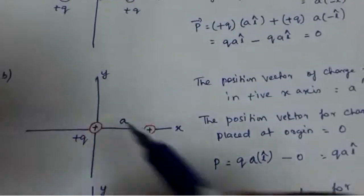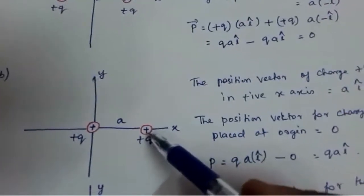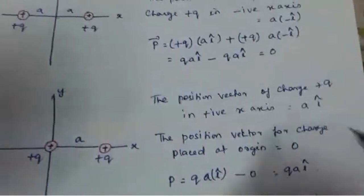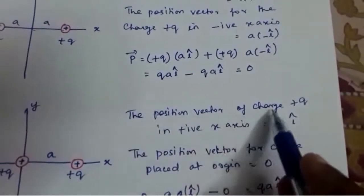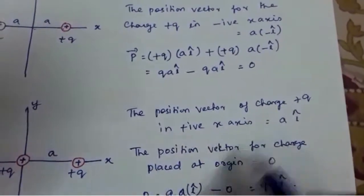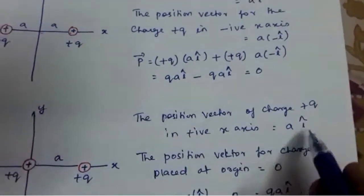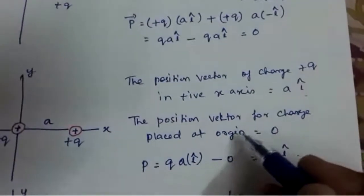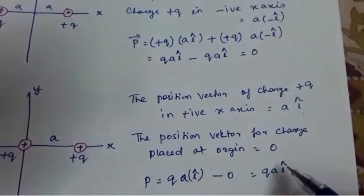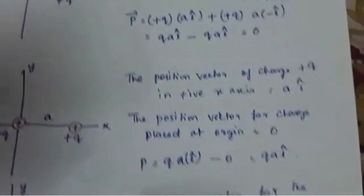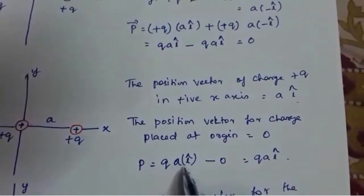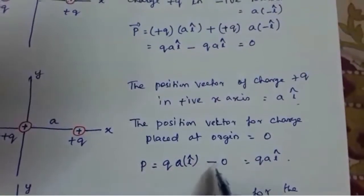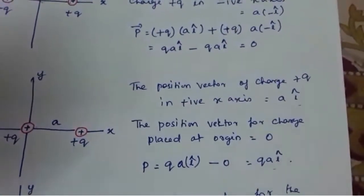For the second case, in the diagram two charges: one is in the positive x-axis and one is placed at the origin. The position vector of charge +q in the positive x-axis is a into î-vector, and the position vector for the charge at the origin is 0. So the dipole moment is P = q(aî) - 0 = qaî.